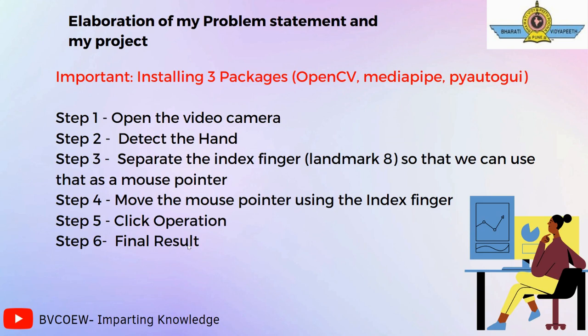Now I'll elaborate on my problem statement. The very first step is to install the three packages: OpenCV, MediaPipe, and PyAutoGUI. There are only six steps in my project. Step one: open the video camera. Step two: detect the hand. Step three: separate the index finger to use it as a mouse pointer. Step four: move the mouse pointer using the index finger. Step five: the click operation. Step six: the final result.